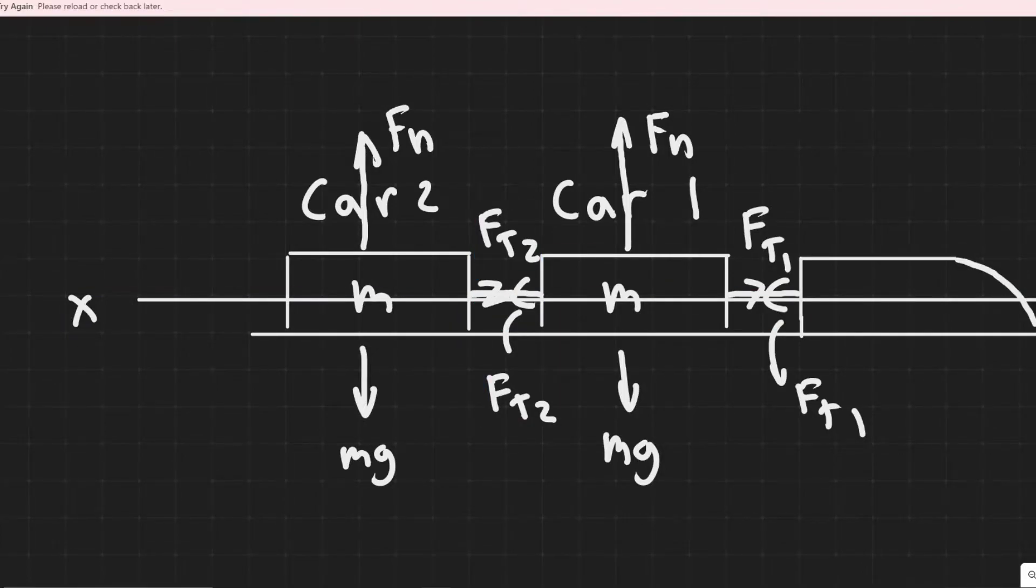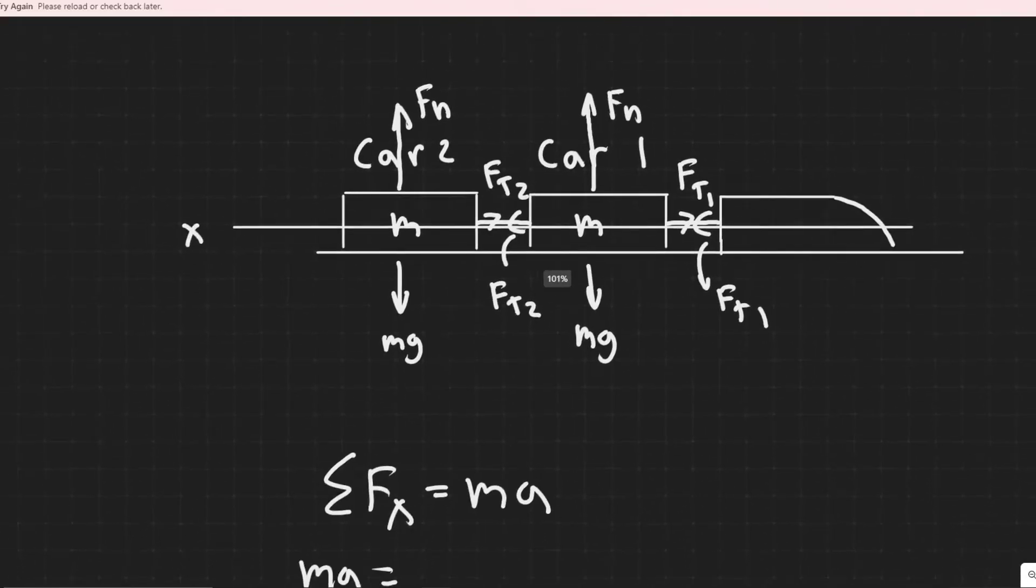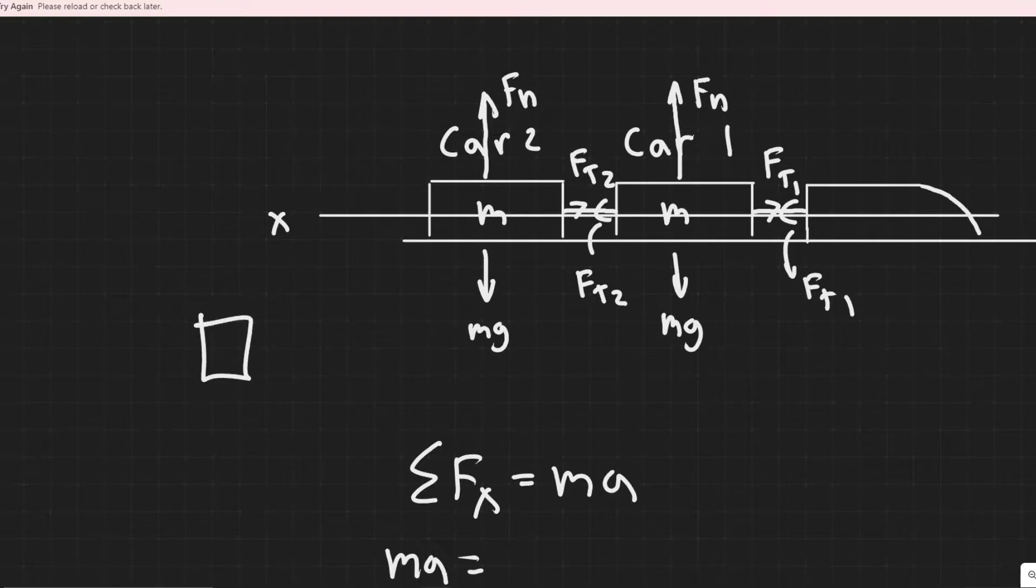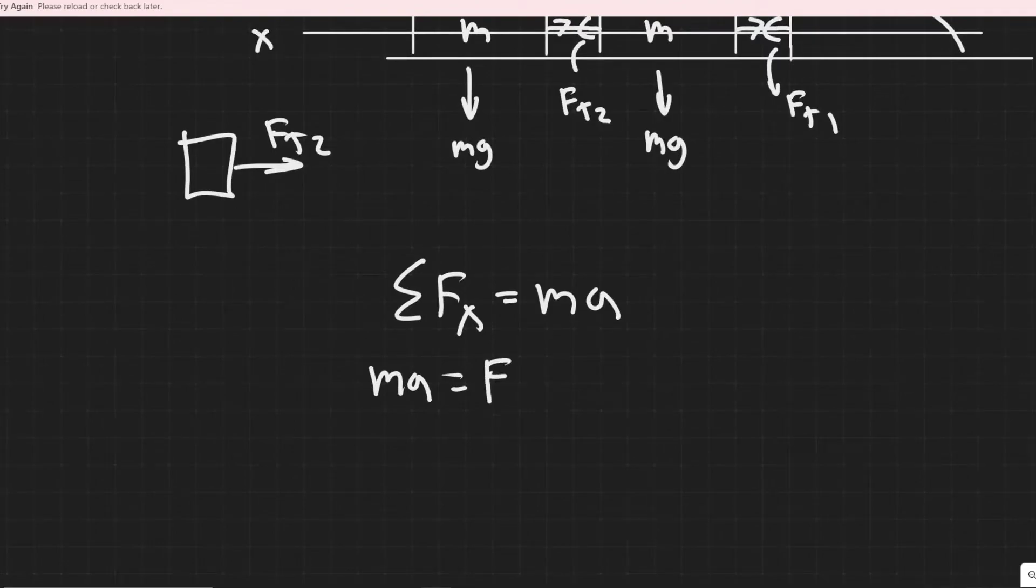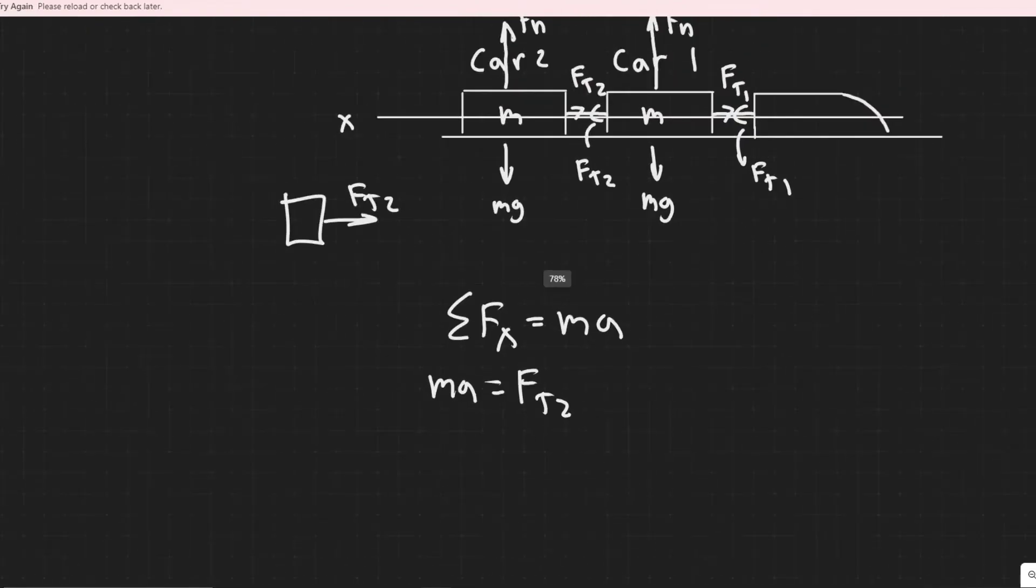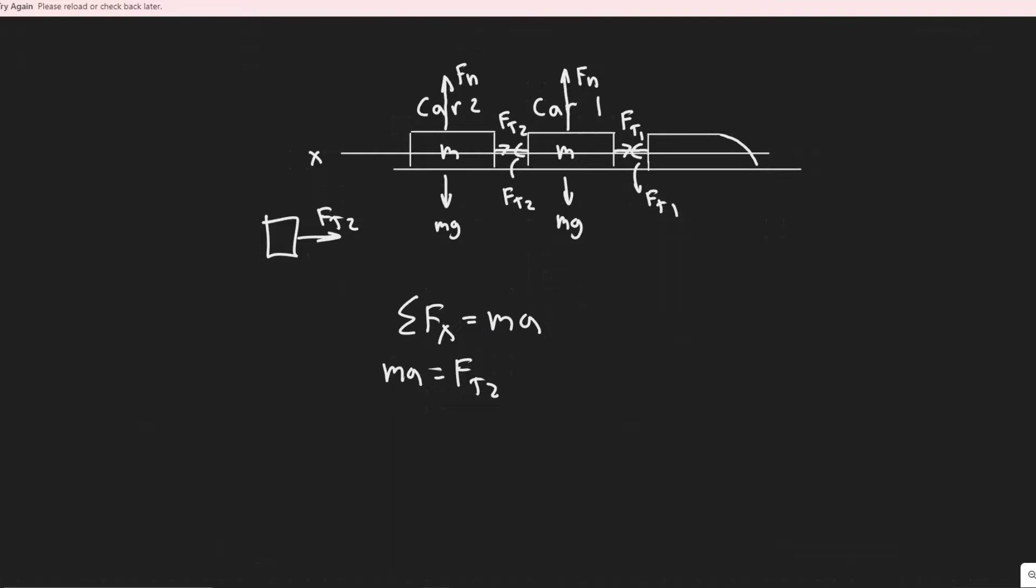So on this one, it's going to be pulling this way. So it's kind of like that. If I was to just redraw it, we have Ft2 acting this way. So MA equals Ft2 in this case. And so that's the sum of the forces in the X for that one.